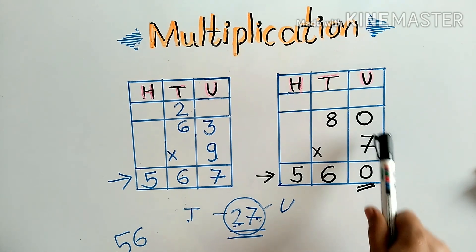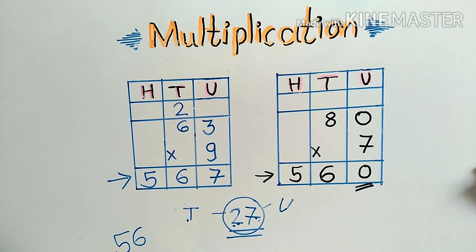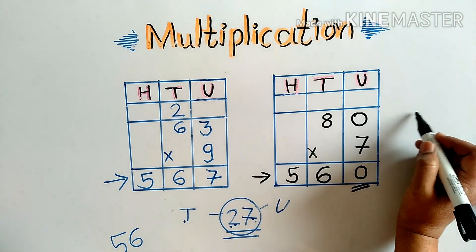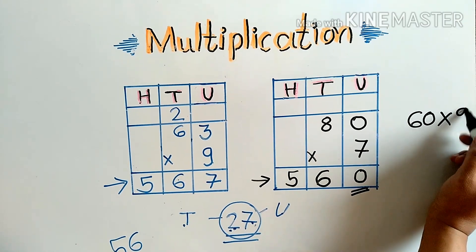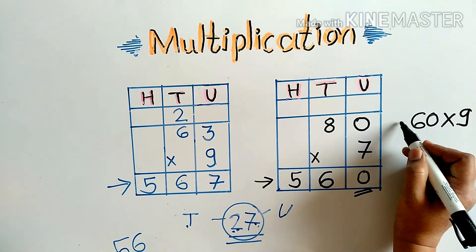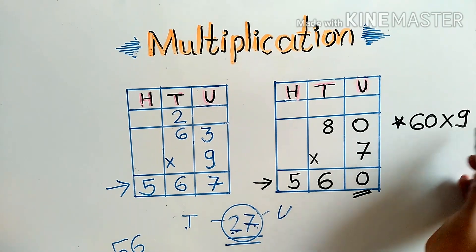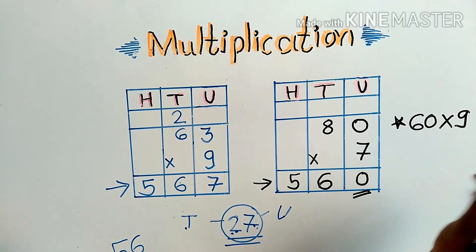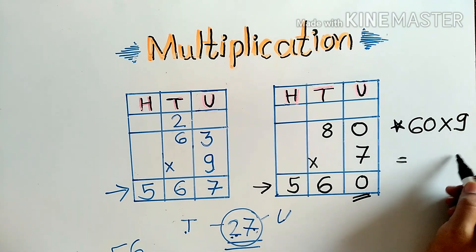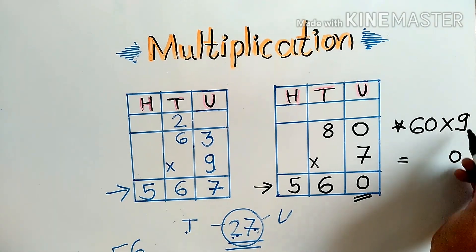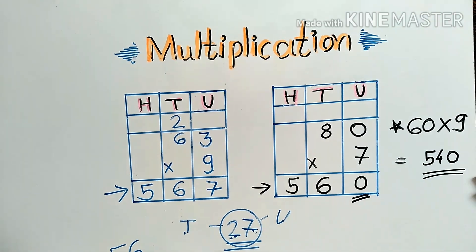When there is a 0 in any number, multiplication becomes very easy. For example, if we take 60 multiplied by 9, we first write 0, then 9 sixes are 54, so we get the answer 540.